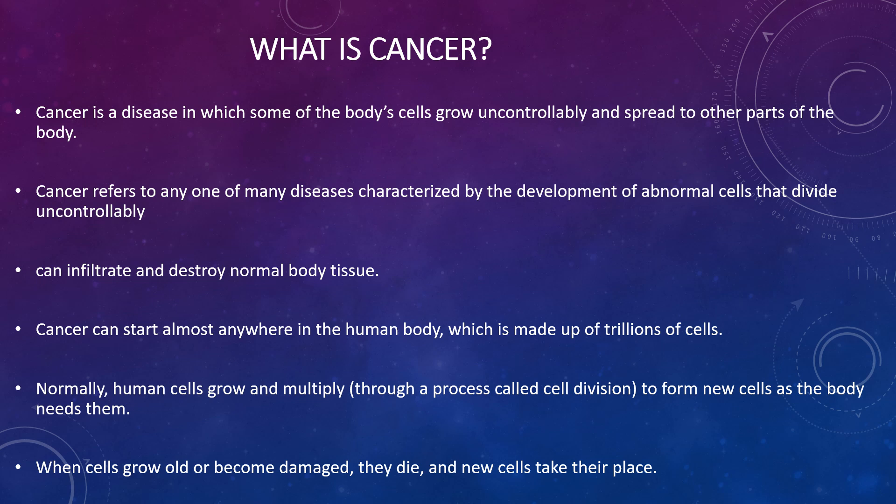Normally, human cells grow and multiply through a process called cell division to form new cells as the body needs them. When cells grow old or become damaged, they die and new cells take their place, usually through apoptosis, programmed cell death.